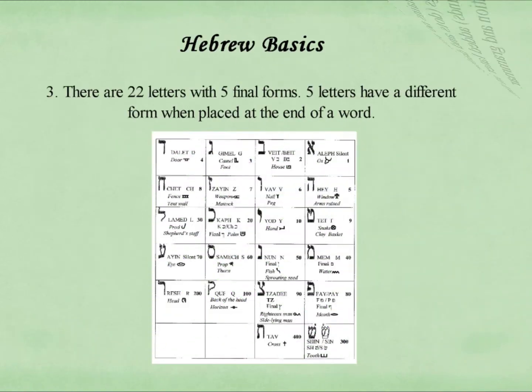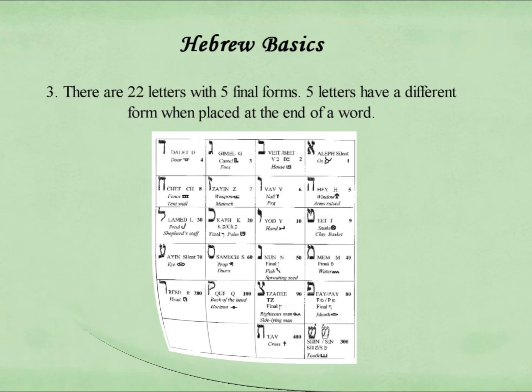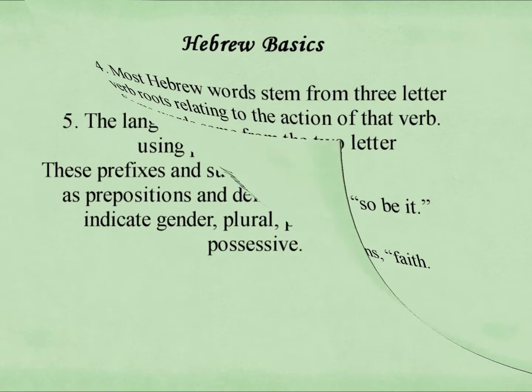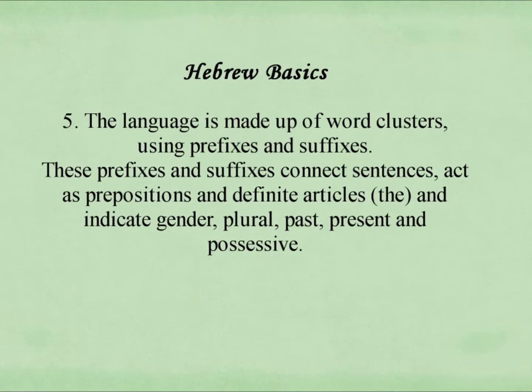Number three: there are 22 letters and five final forms. Five letters have a different form when they are placed at the end of a word. Number four: most Hebrew words stem from three-letter verb roots and relate to the action of that verb. Number five: the language is made up of word clusters using prefixes and suffixes.